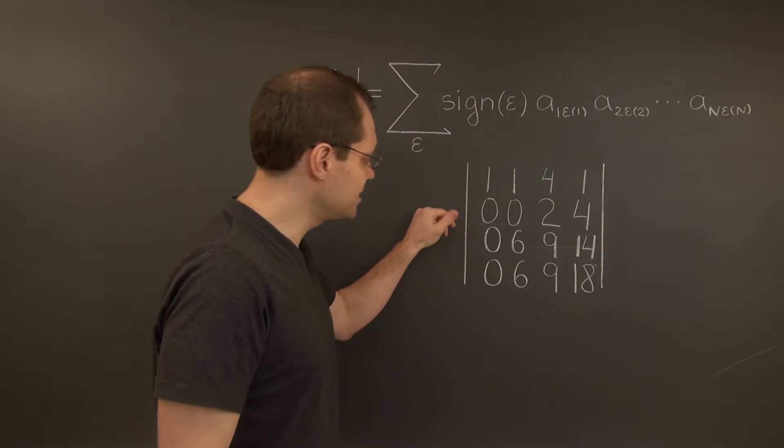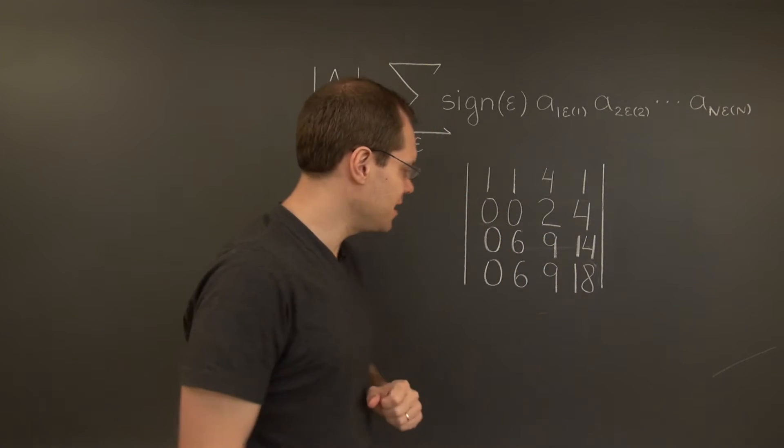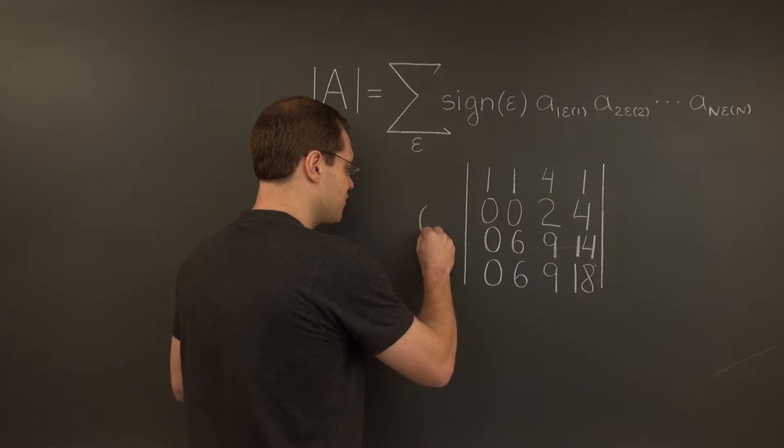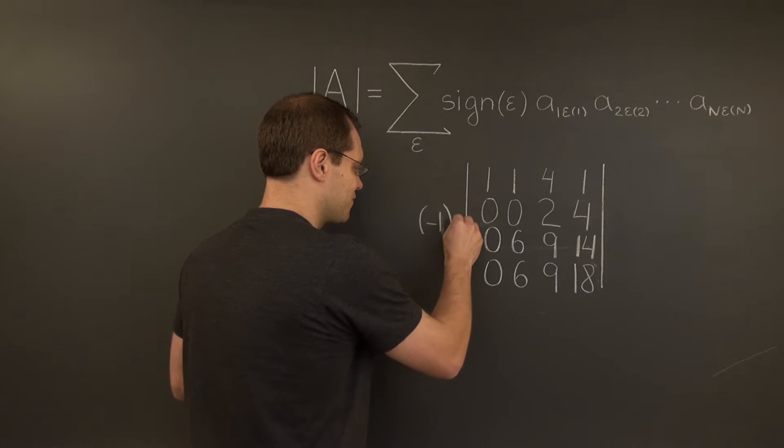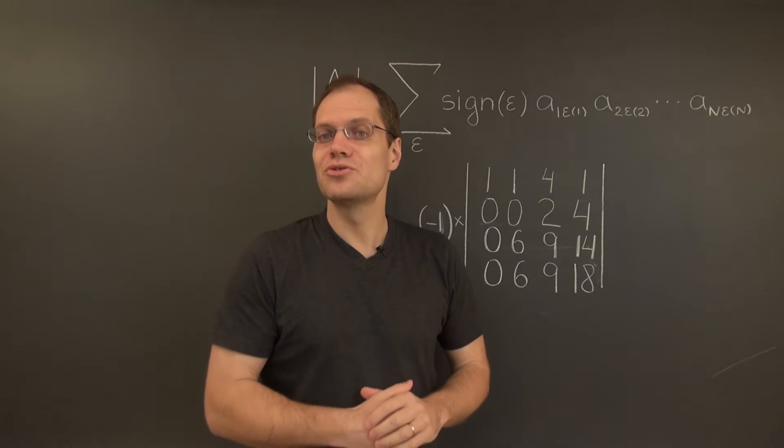So in other words, this operation multiplies the determinant by minus 1. So let's remember that by bringing out a factor of minus 1 in front. Okay, and now we will switch the two rows.